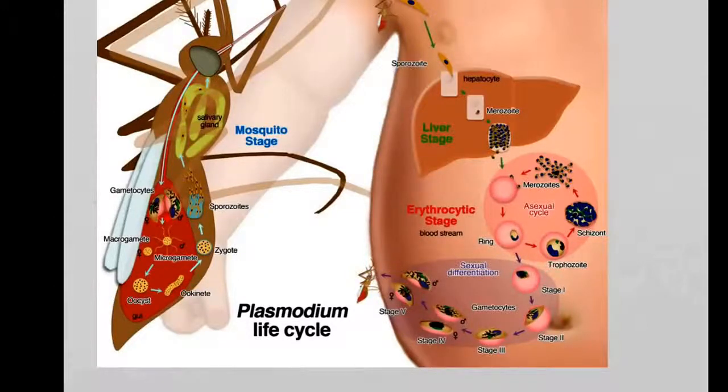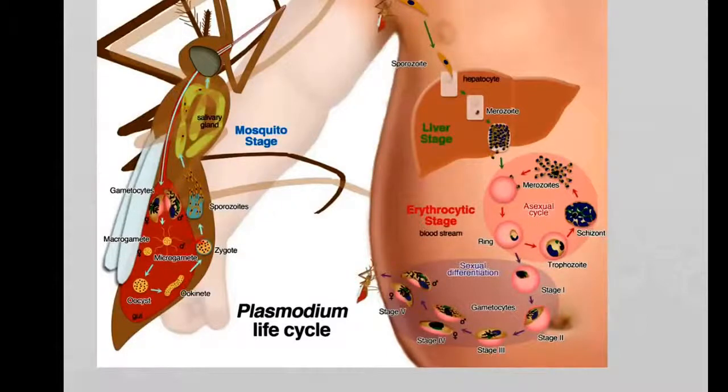They form what is called an oocyst. This oocyst grows into an ookinete form, a zygote—that's just simply a male and a female cell fused together. This zygote then develops into these sporocytes.